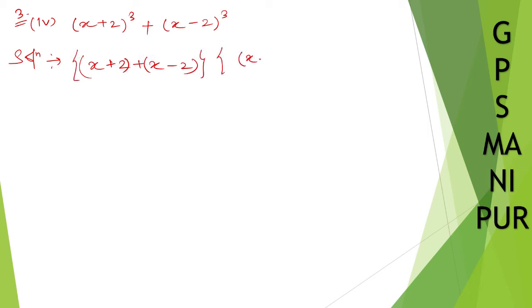A square. So (x + 2)² minus ab, (x + 2)(x - 2), minus ab plus b square. So (x - 2)².